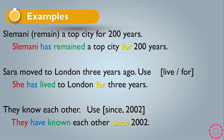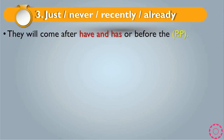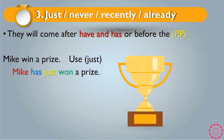The third type of words used with present perfect are just, never, recently, and already. They come after have and has, or before the past participle. Example: 'Mike win a prize' — use just. It becomes 'Mike has just won a prize.' With the name Mike we use has, win changes to its past participle won, and just comes after has.